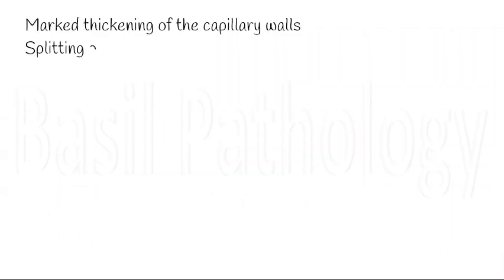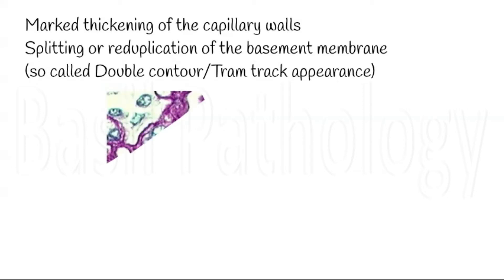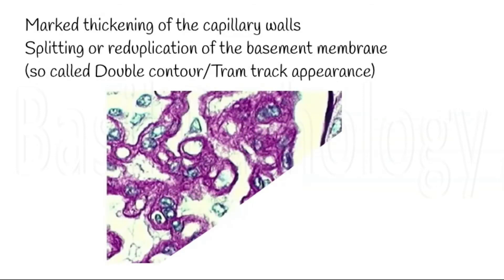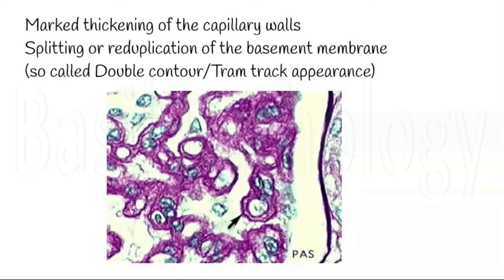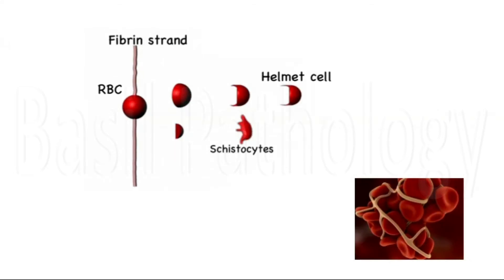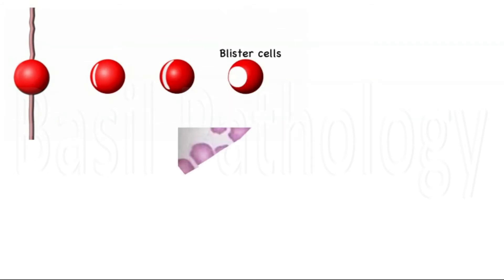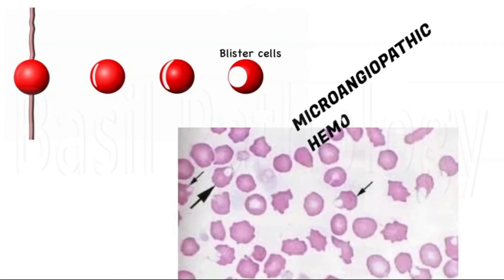In the glomeruli, we can see peculiar changes like marked thickening of the capillaries and splitting or duplication of the glomerular basement membrane. You can see the same so-called double contours or tram tracks in the capillary basement membrane. When RBCs are trapped in the fibrin, they are fragmented and produce helmet cells, schistocytes, and blister cells, resulting in microangiopathic hemolytic anemia.